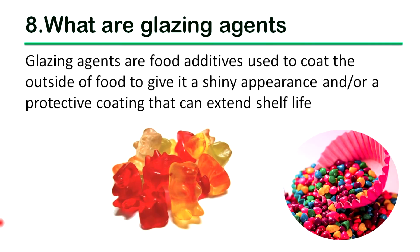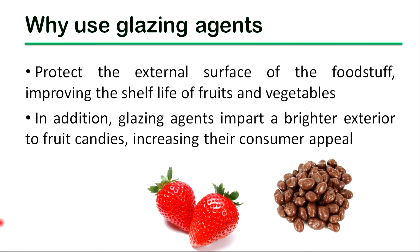Then let's see what glazing agents are in foods. Glazing agents are food additives used to coat the outside of food to give it a shiny appearance and/or a protective coating that can extend the shelf life. Glazing agents protect the external surface of foodstuffs, improving the shelf life of fruits and vegetables. In addition, glazing agents impart a brighter exterior to fruit candies, increasing their consumer appeal.